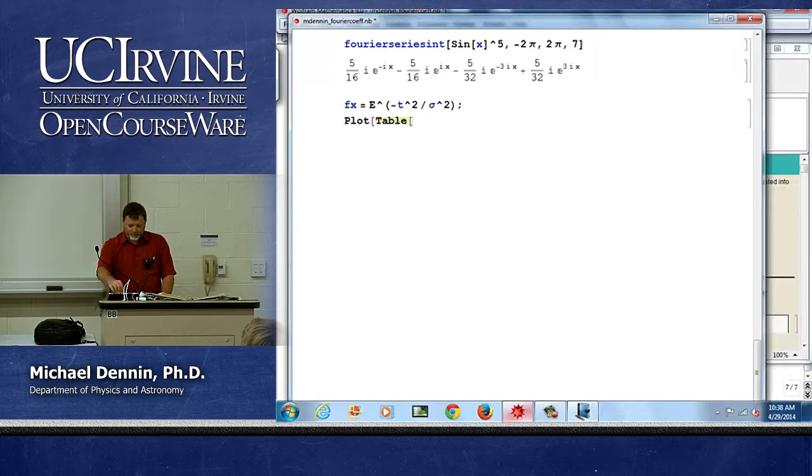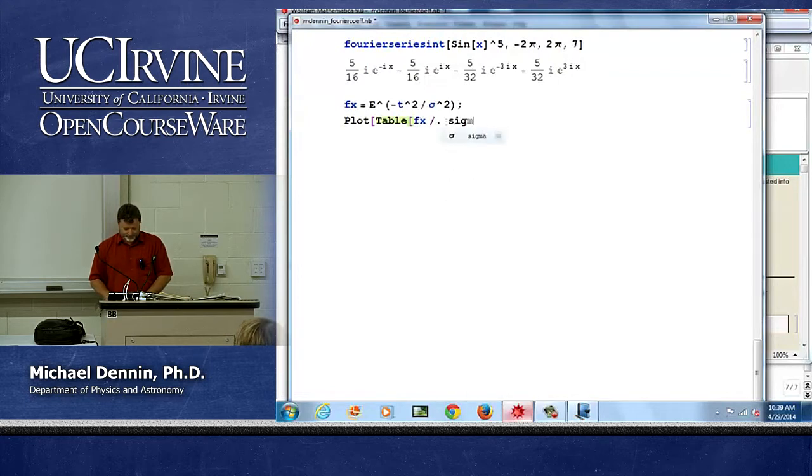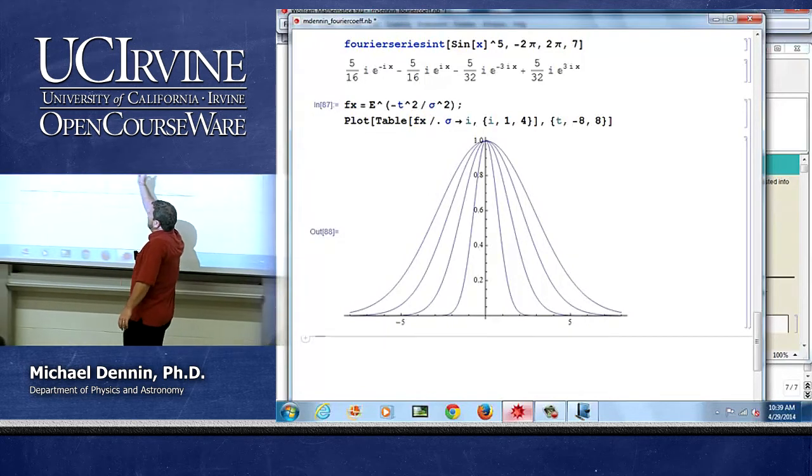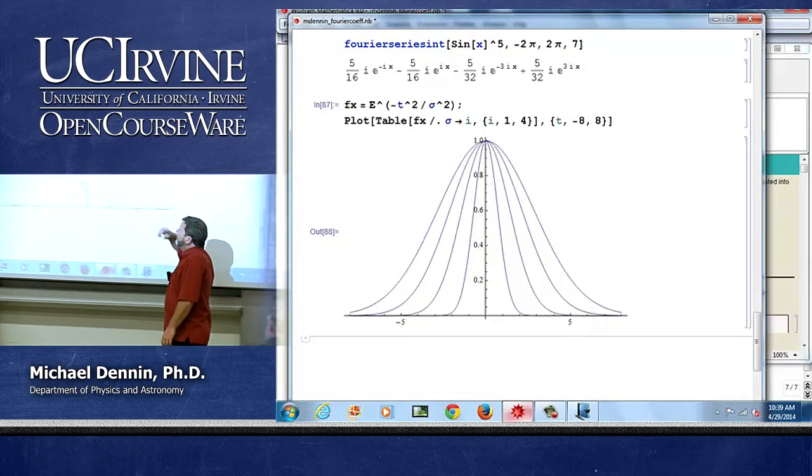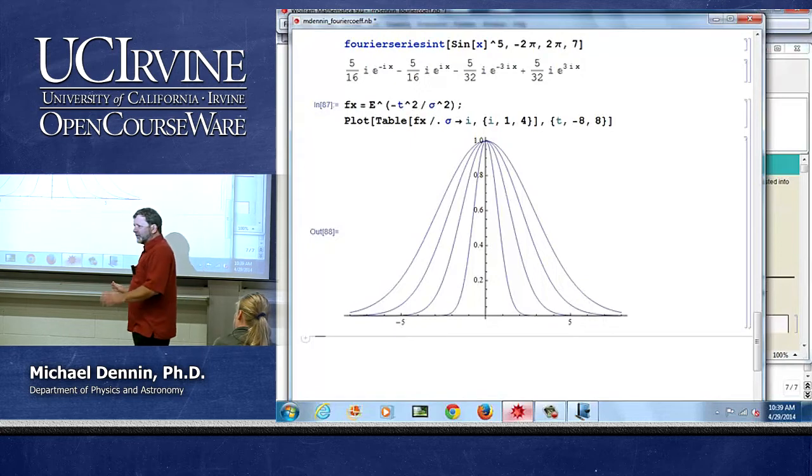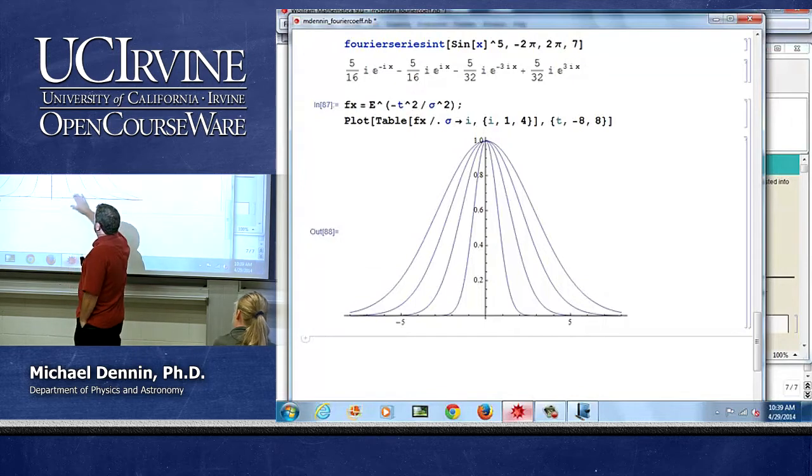I don't know why I was going to draw it because I'm about to plot it. I want various values of sigma. So I'm going to make a little table here of functions. Let's do four of them. And I'm going to plot from t goes from minus 8 to 8. One of the challenges is there's various ways to do this. If I do the table inside the plot, I don't get different colors. The color thing works a little weird. So getting your curves in different colors is kind of fun. But these are sigma getting bigger and bigger and bigger.